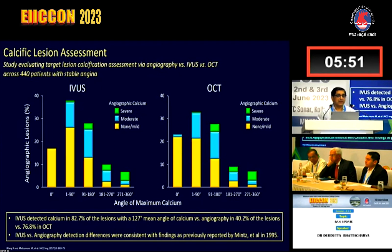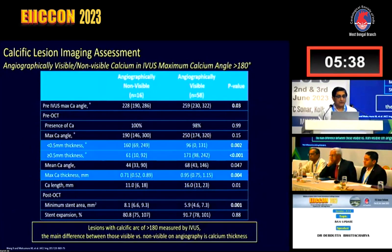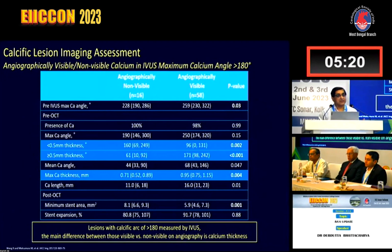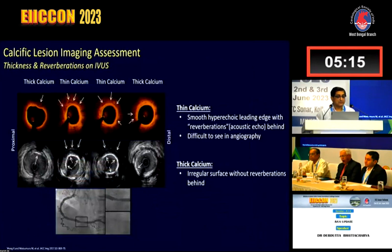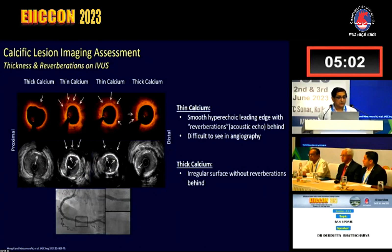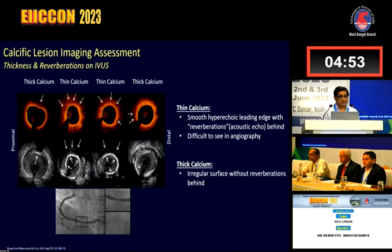These two papers demonstrate how powerful an imaging tool IVUS is for calcium detection. If you are doing angioplasty and suspecting a calcific lesion, IVUS is an excellent tool. Angiographically non-visible calcium at IVUS maximum calcium angle greater than 180 degrees — the main difference between those visible versus non-visible on angiography is calcium thickness. The comparative comparison between OCT and IVUS is instructive here.